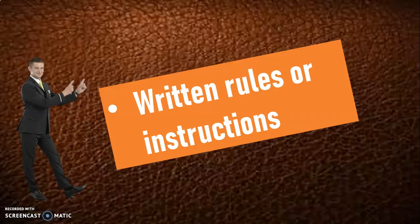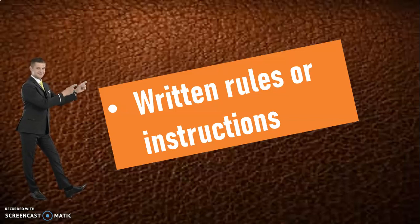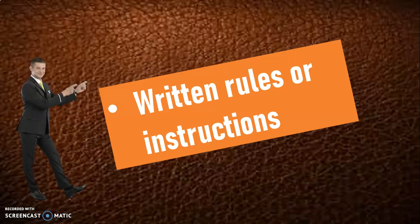Vamos a averiguar cómo podemos utilizar MUST. We use it for written rules or instructions. Vamos a utilizarlo para todo aquello que tenga que ver con reglas o con órdenes que se nos están dando. En este caso, tenemos que realizar todo lo que se nos dice. De lo contrario, esto nos va a provocar alguna consecuencia porque no hay otra alternativa más que realizarlo.